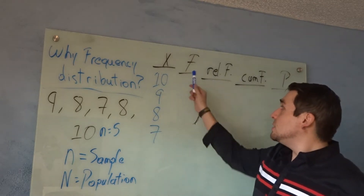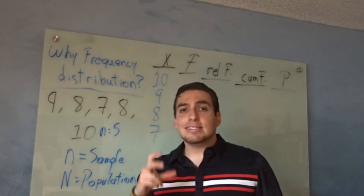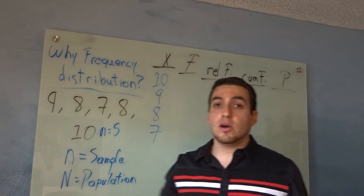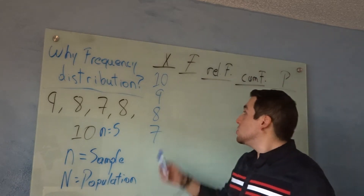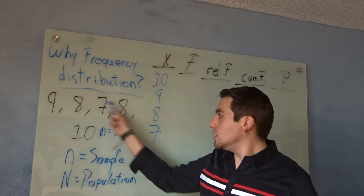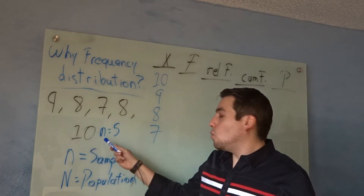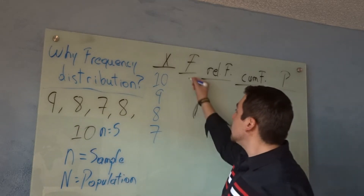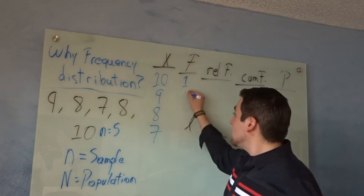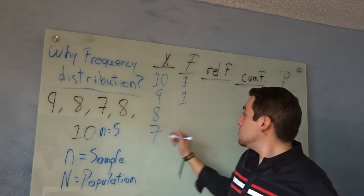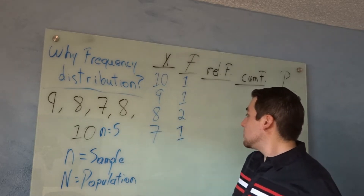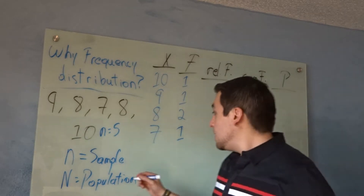The frequency is denoted by italicized f, and it tells us how many times each value occurs. So 10 happened once — place a 1 there. 9 happened only once — place a 1. 8 happened two times — place a 2. 7 happened once — place a 1.